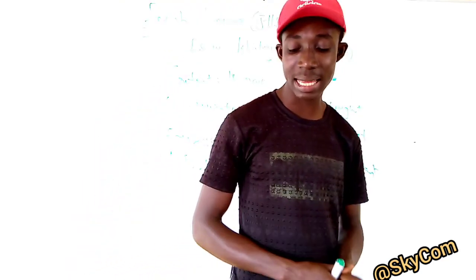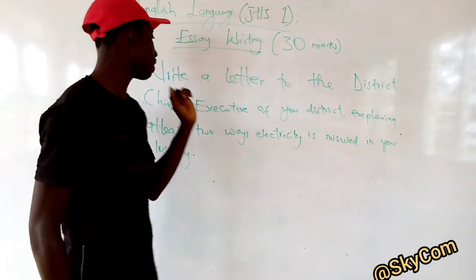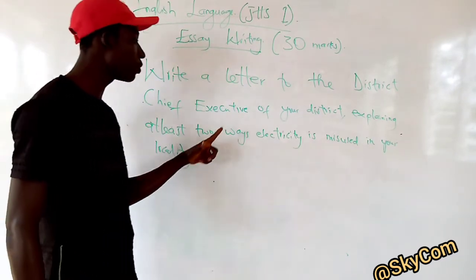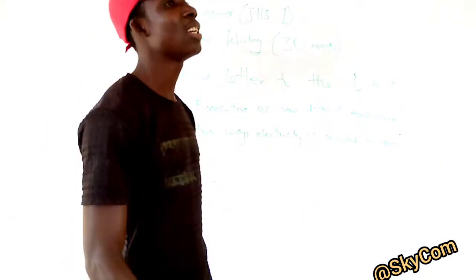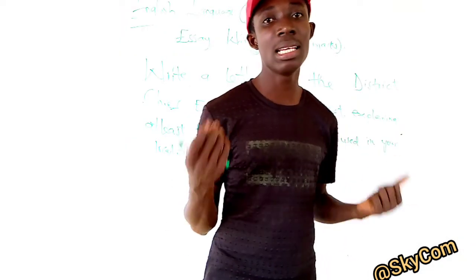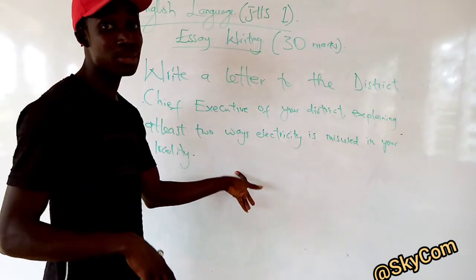Now, time for an exercise — this is your assignment. Write a letter to the district chief executive of your district explaining at least two ways electricity is misused in your locality. The first paragraph should be the introduction. The second one should be a well-developed point. The third one should be another well-developed point — that becomes the two ways. Then the fourth one is going to be a conclusion. But you can have more than four paragraphs because I said at least two ways, so you can write more than two ways.